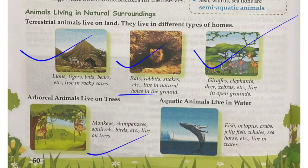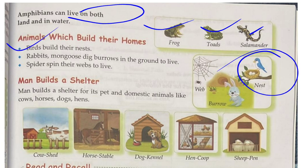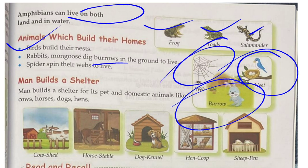Arboreal animals live on trees — like monkeys, chimpanzees, squirrels, and birds. Aquatic animals like fish, octopus, crabs, jellyfish, and whales live in water. Amphibians like frogs, toads, and salamanders can live both on land and in water. Some animals build their own homes: birds build nests, rabbits and mongooses make burrows — deep holes in the ground. Spiders build webs. Man also builds shelters for his pets: cow shed, horse stable, dog kennel, hen coop, and sheep pen.